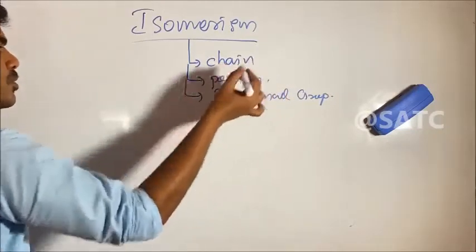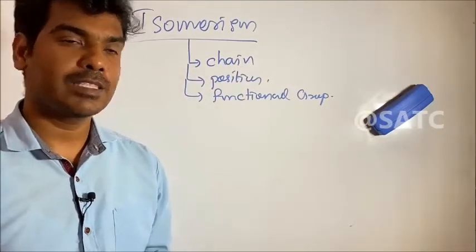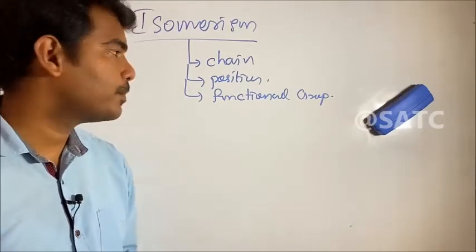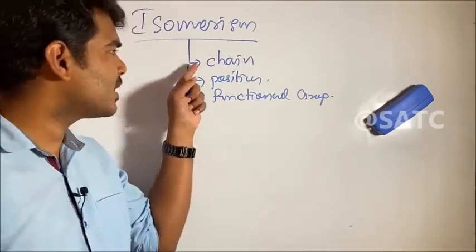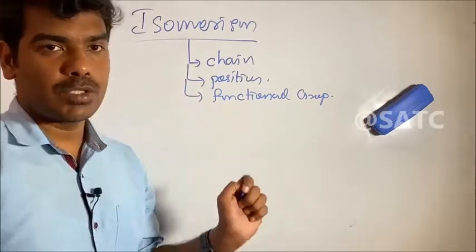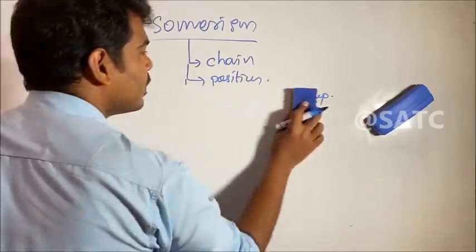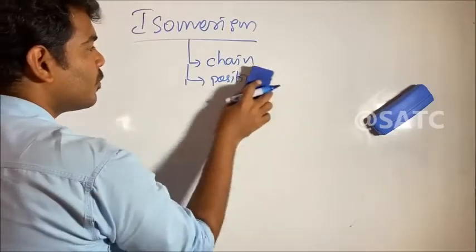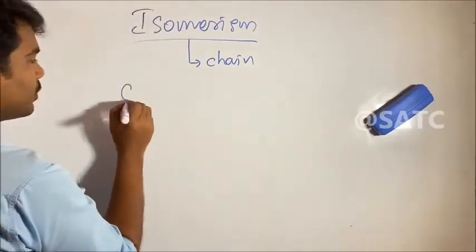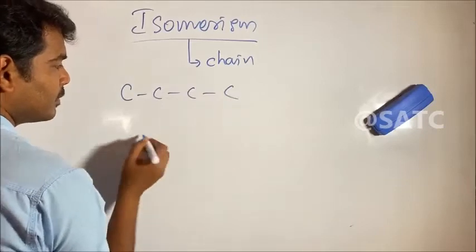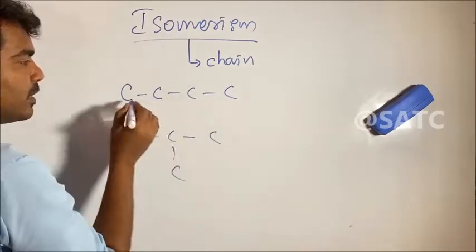This isomerism is a very important topic. Now let's talk about some questions — we will discuss chain isomers and position isomers. First, chain isomers: consider a chain of 1, 2, 3, 4 carbons.